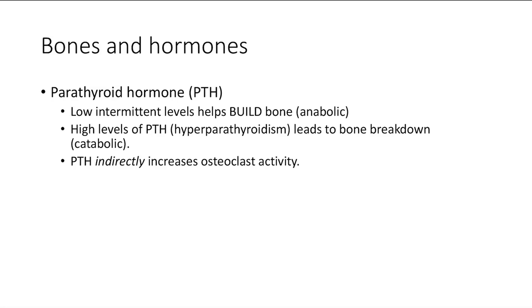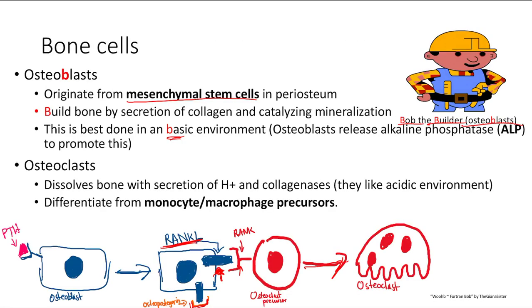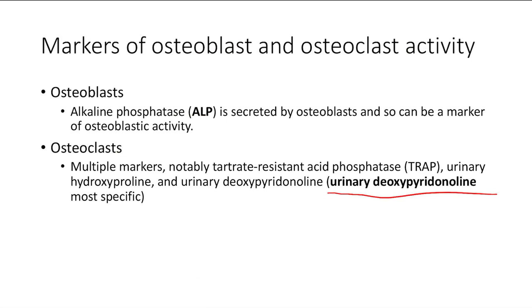It's important to note that PTH indirectly increases osteoclast activity — because PTH acts on osteoblasts. It increases osteoclast activity, but it's through osteoblasts. So it's going to act on osteoblasts to lead to increased osteoclast differentiation, and thus you have increased osteoclast activity indirectly.